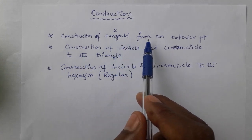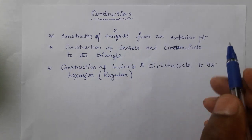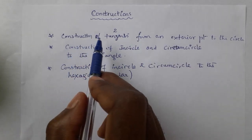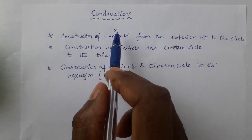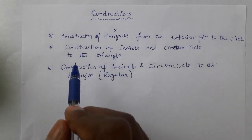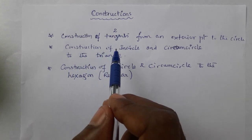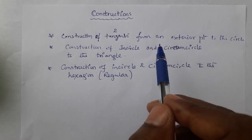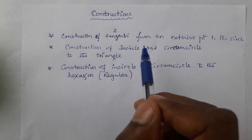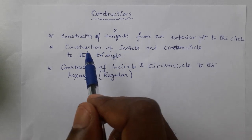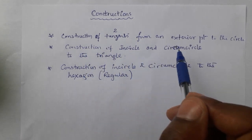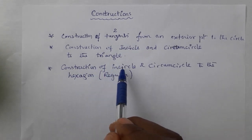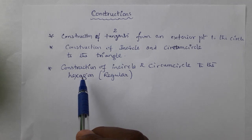The first one is construction of two tangents from an exterior point to the given circle. The second one is construction of incircle and circumcircle. They may ask incircle or circumcircle — anyone. But we have learnt construction of incircle as well as circumcircle to the given triangle, and also to the given regular hexagon.